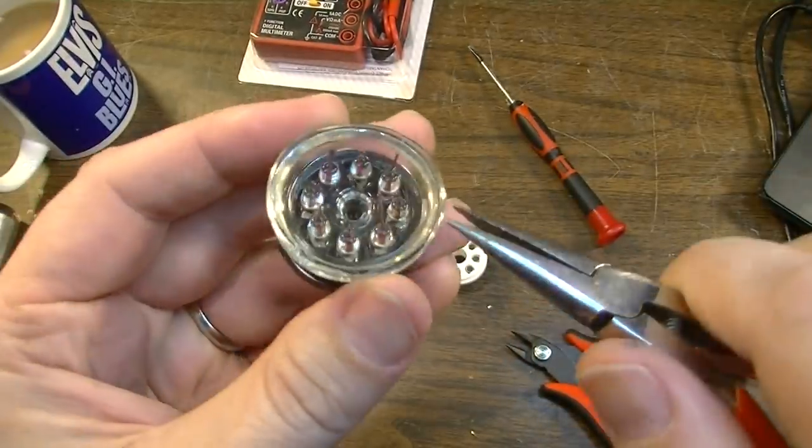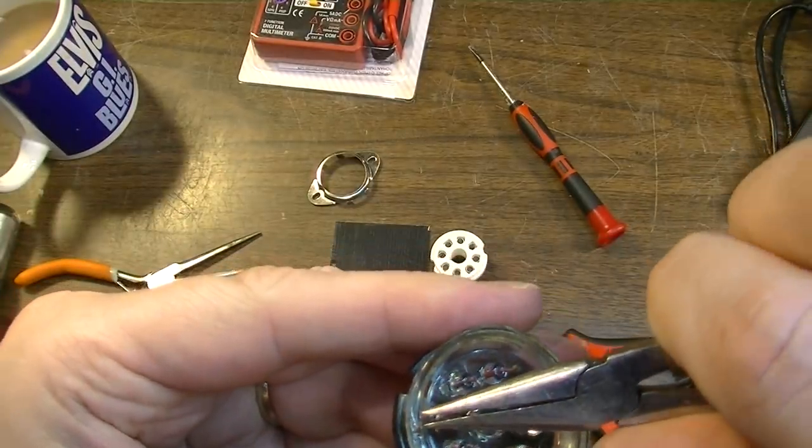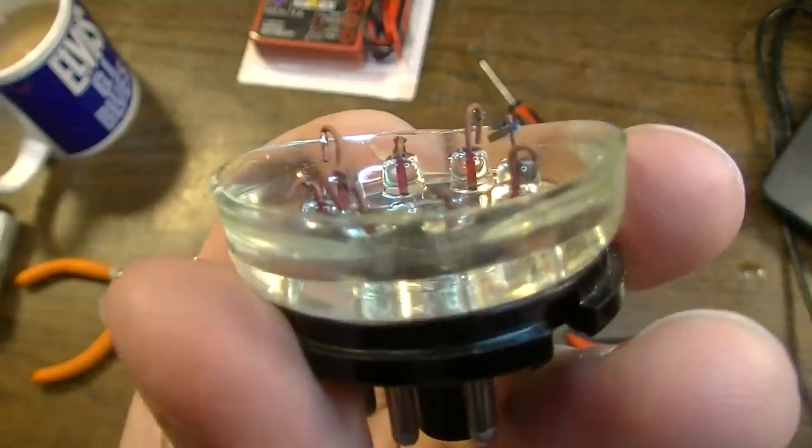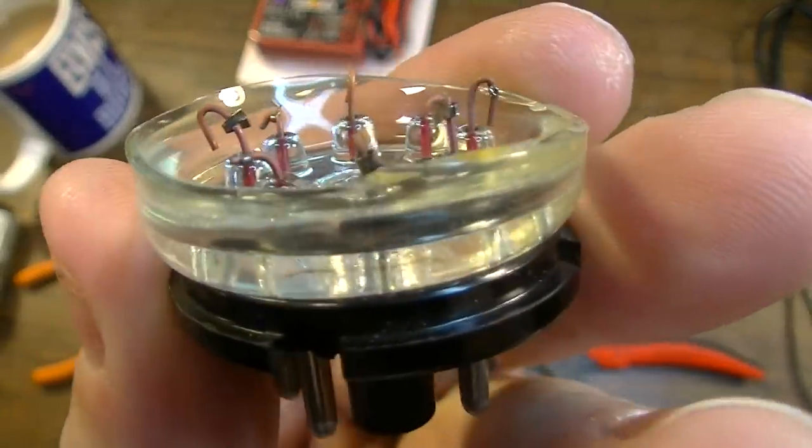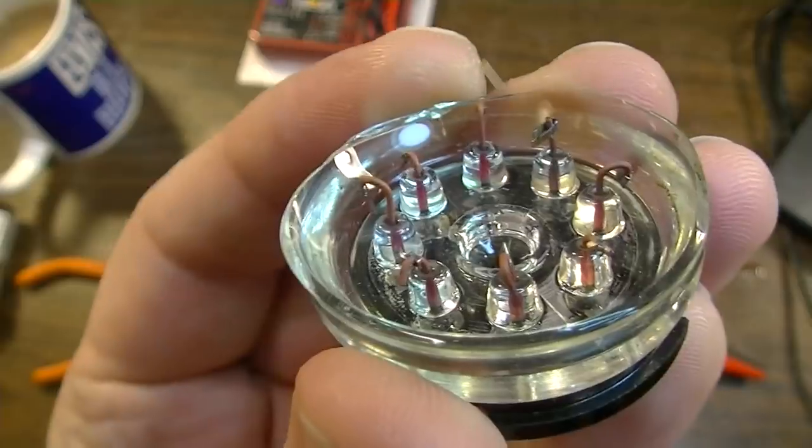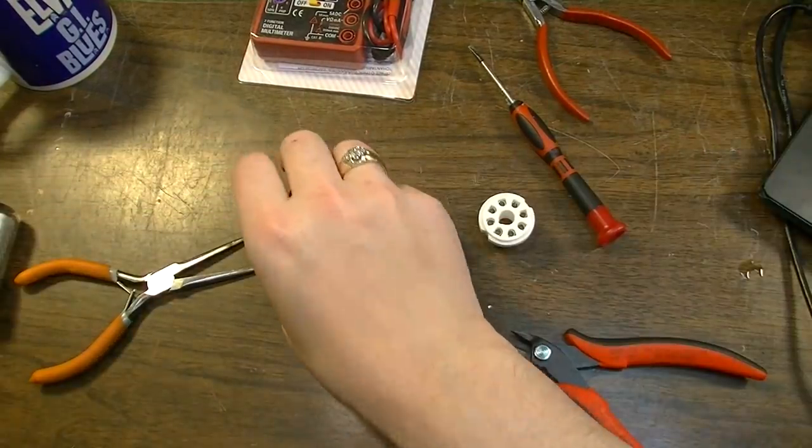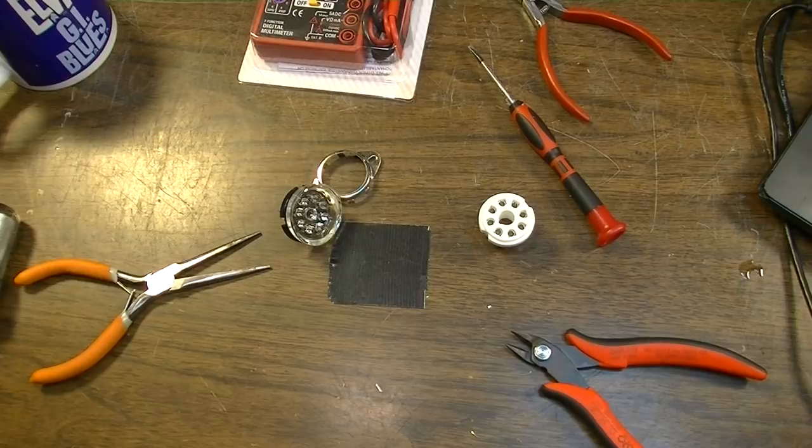A couple of them are long enough already, but not all of them are. So what we're going to do, we're going to actually solder on some extensions. So there are all of those bent into shapes that we can solder to. Now we're going to add some leads to these, and I'm going to use a fairly thick gauge.